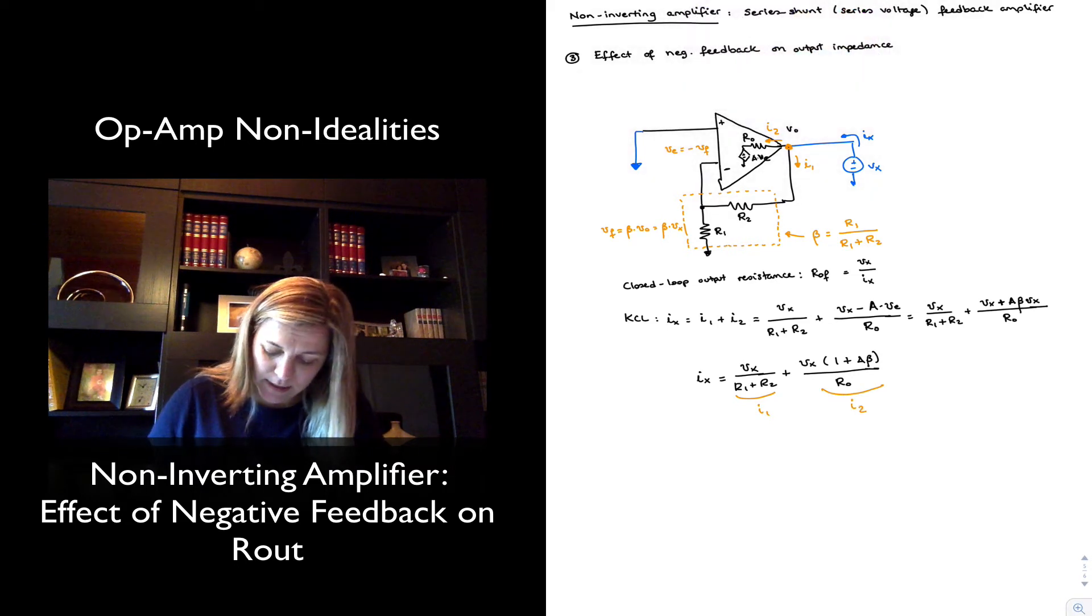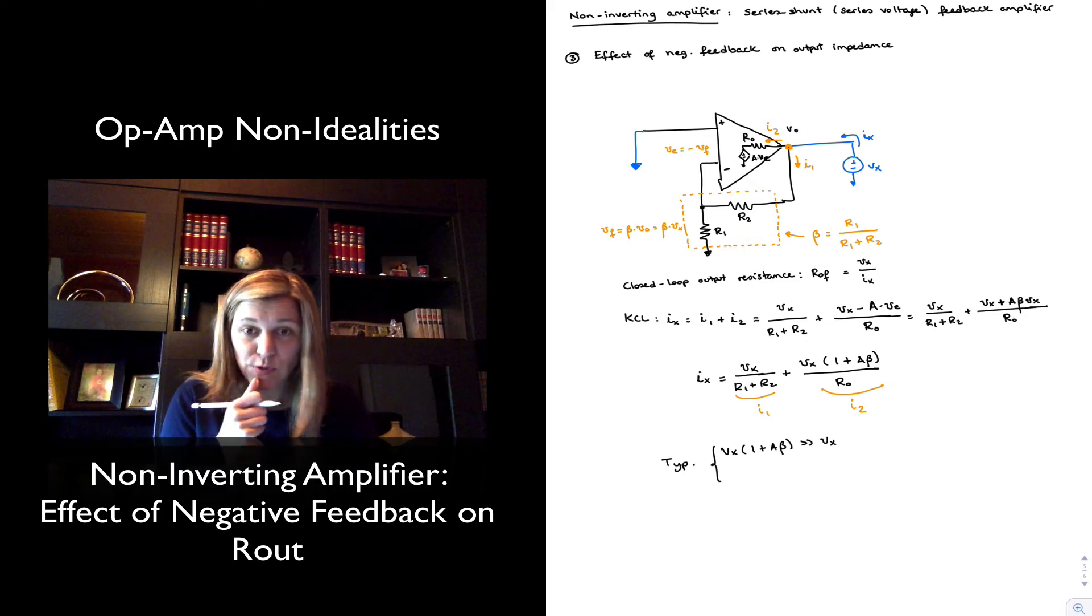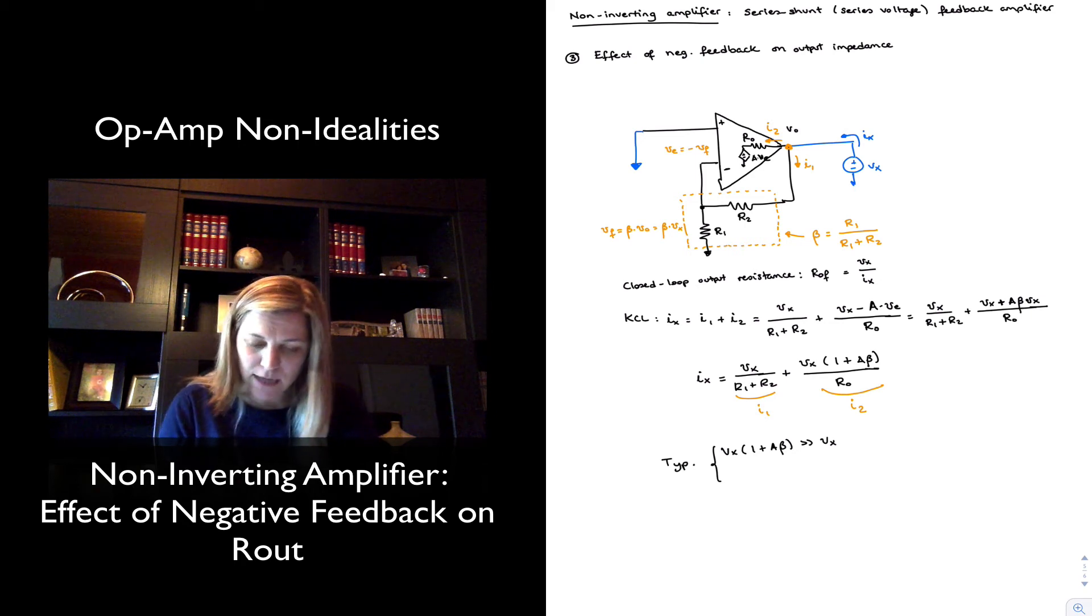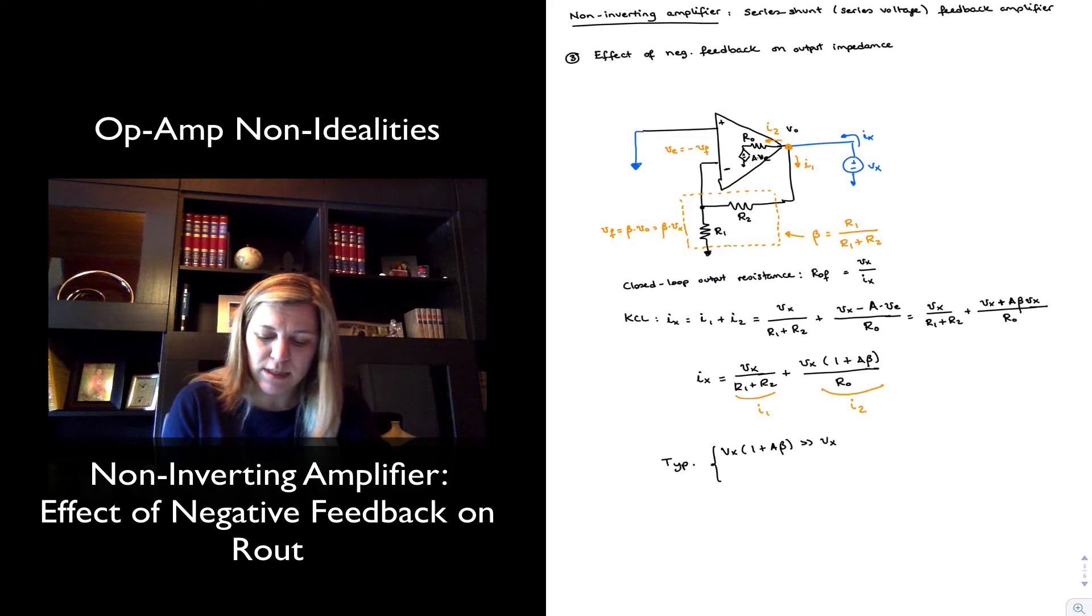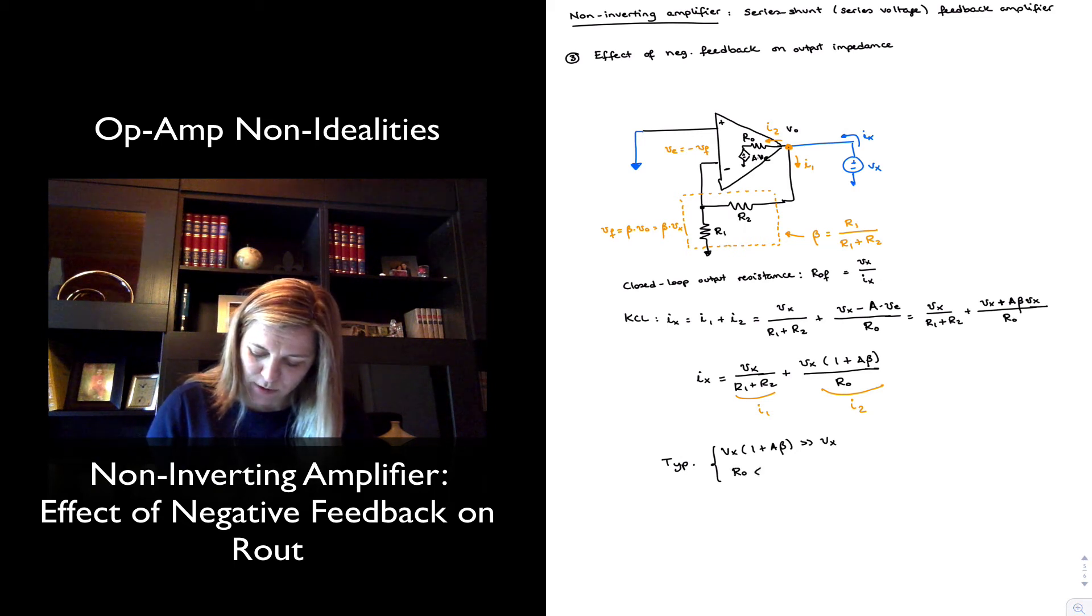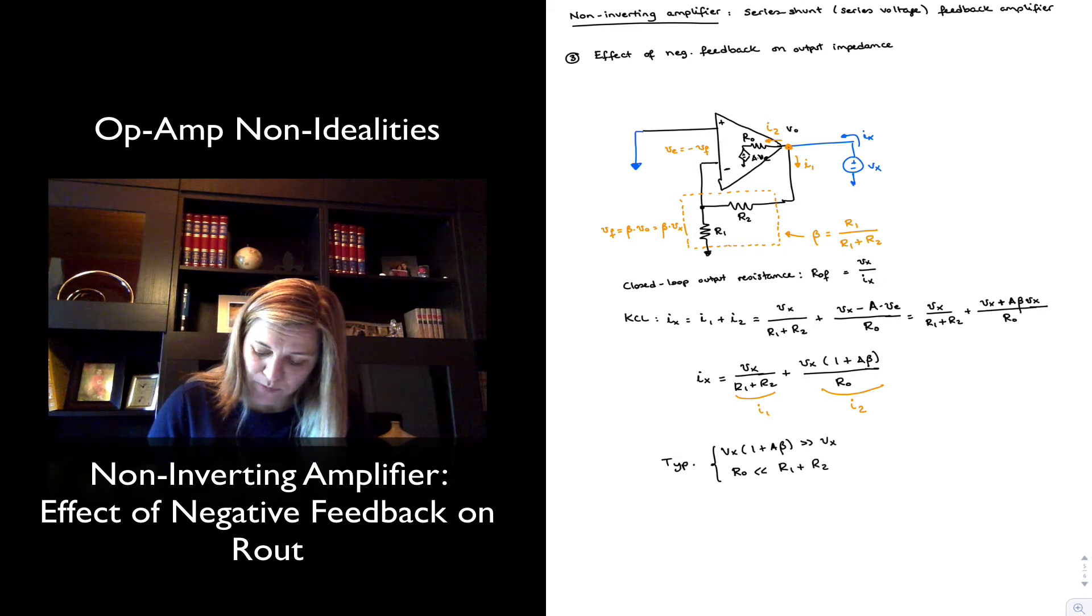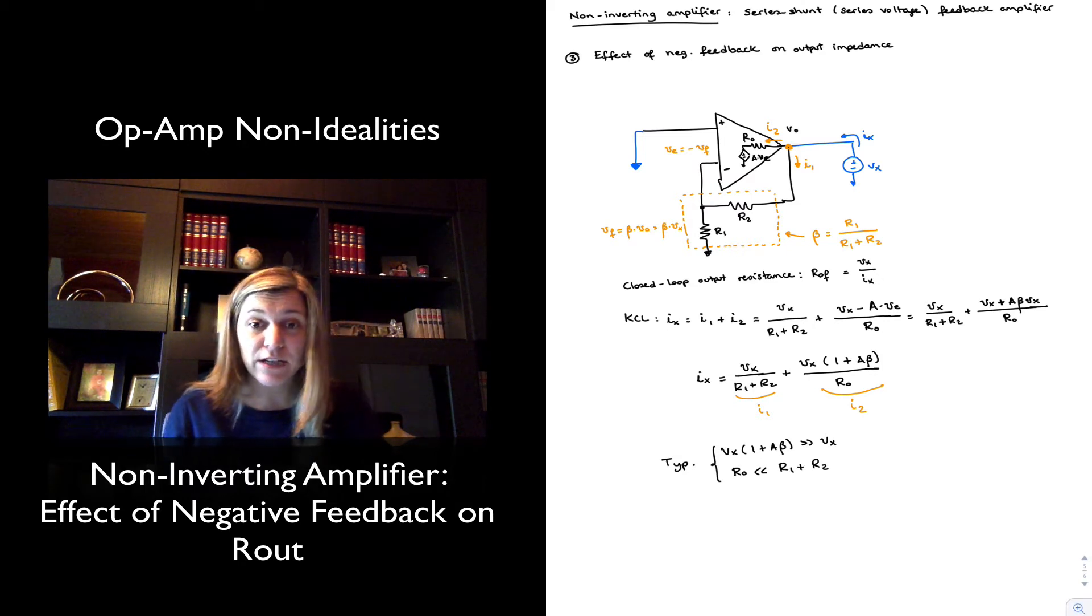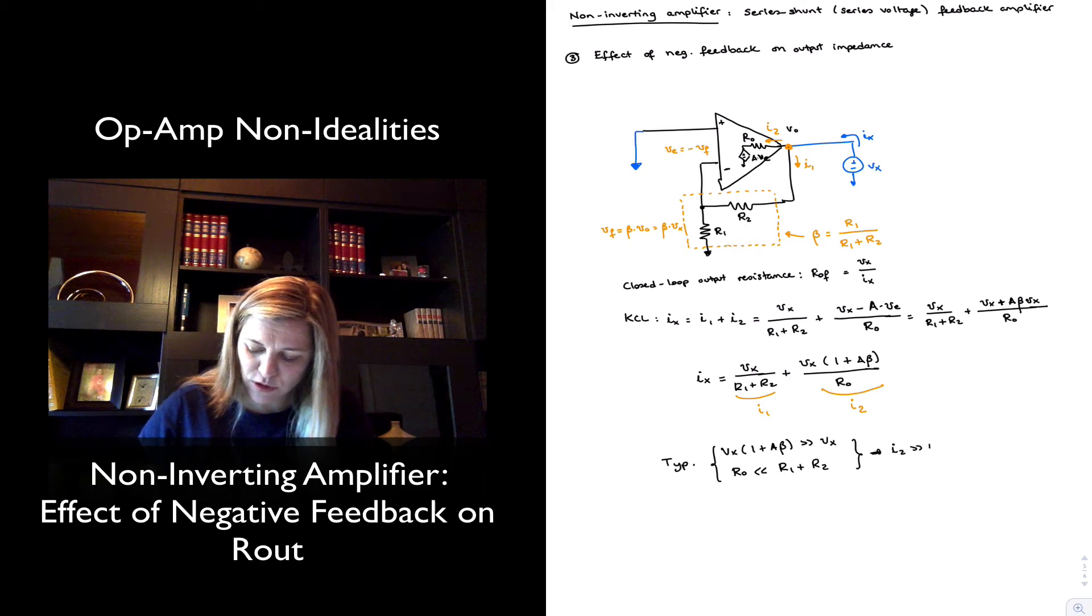But something that we can notice is that typically Vx times 1 plus A beta is going to be much greater than Vx. So basically, the numerator of I2 is going to be much greater than the numerator of I1. And also, typically, for a normal op-amp, R out is going to be small. And so the externally connected resistors are typically going to be orders of magnitude larger. And so R out is going to be much smaller than R1 plus R2. And so if we have the term of I2 having a much larger numerator and a much smaller denominator than the term for I1, it means that I2 is typically going to be much larger than I1. So that implies I2 is much larger than I1.